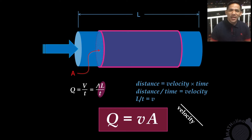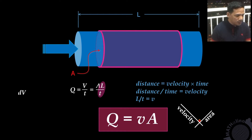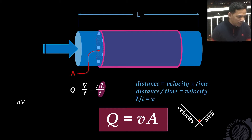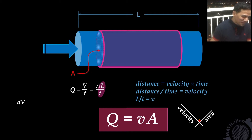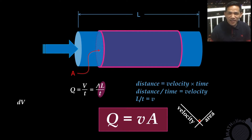Take note that in this formula, the velocity and the area must be perpendicular to each other. Now we are going to analyze this formula when time is infinitesimally small.